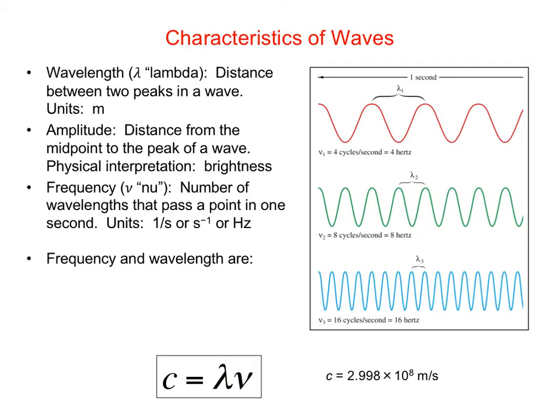There are a number of properties of waves that we want to be familiar with. The first one is wavelength - the distance between any two peaks in a wave. The symbol we use to abbreviate wavelength is the Greek letter lambda (λ), and the units need to be a distance unit. Typically we'll use meters or some variation like nanometers or millimeters.